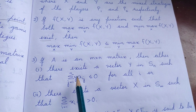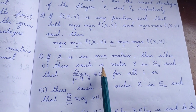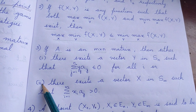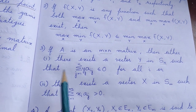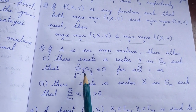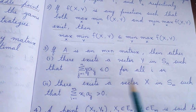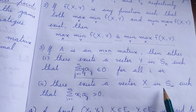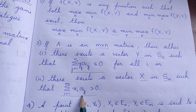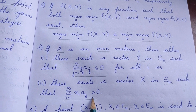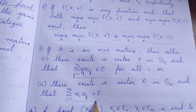Another thing we need in the proof is that if A is an m by n matrix, then either condition 1 or condition 2 always holds. That is, either there exists a vector y in Sn such that summation j equal to 1 to n yj aij is less than or equal to 0 for all i, or there exists a vector x in Sm such that summation over i equal to 1 to m xi aij is greater than 0.